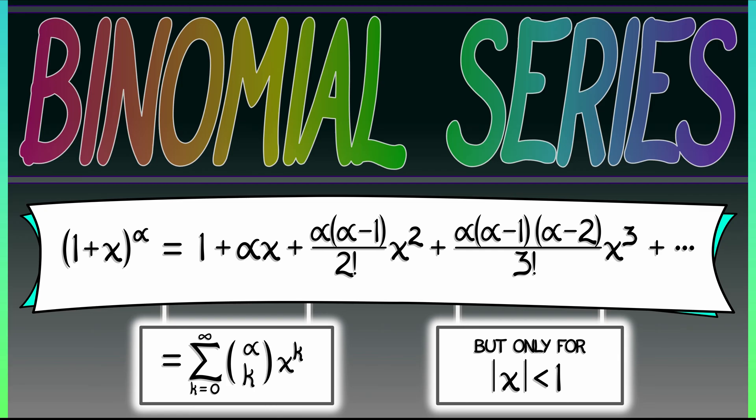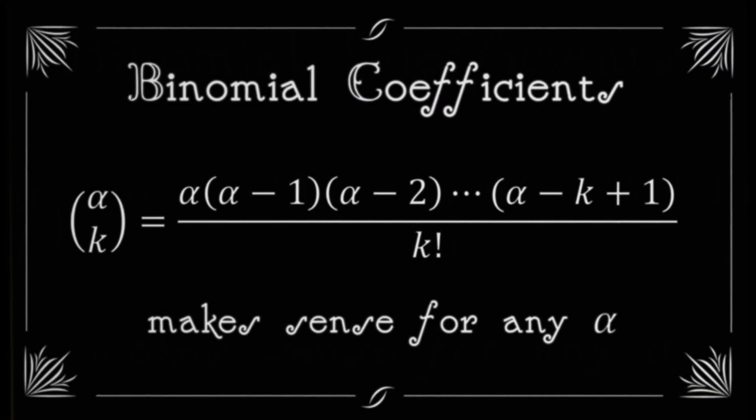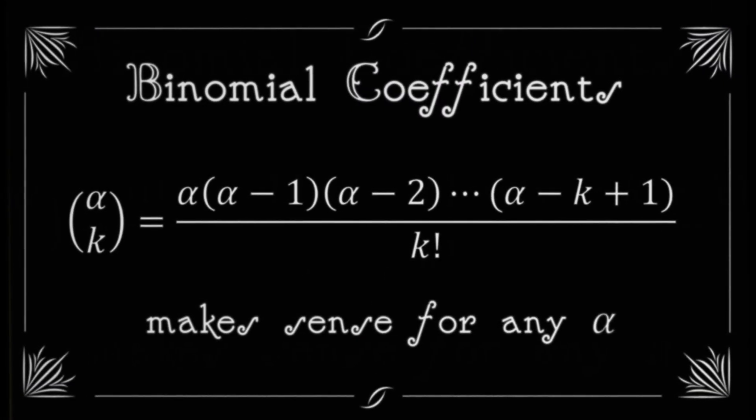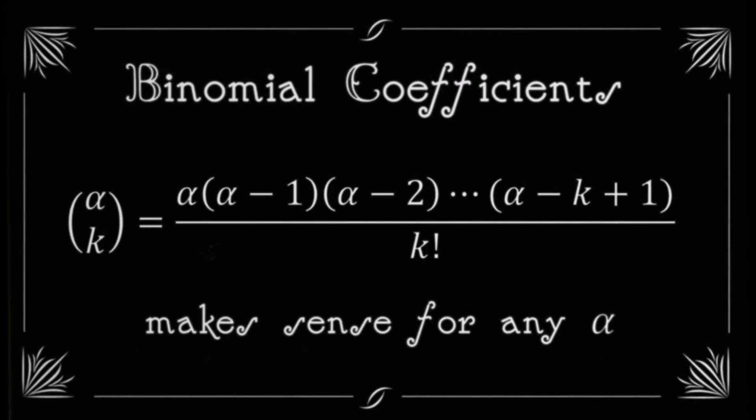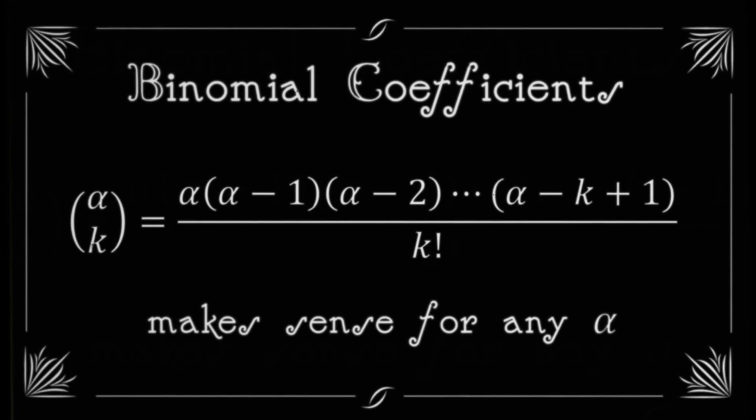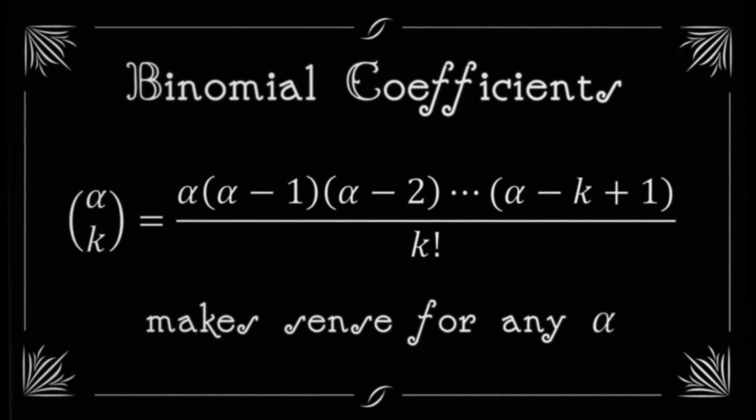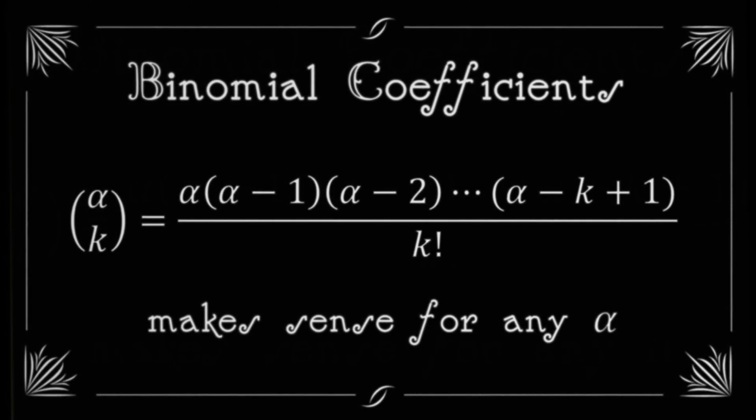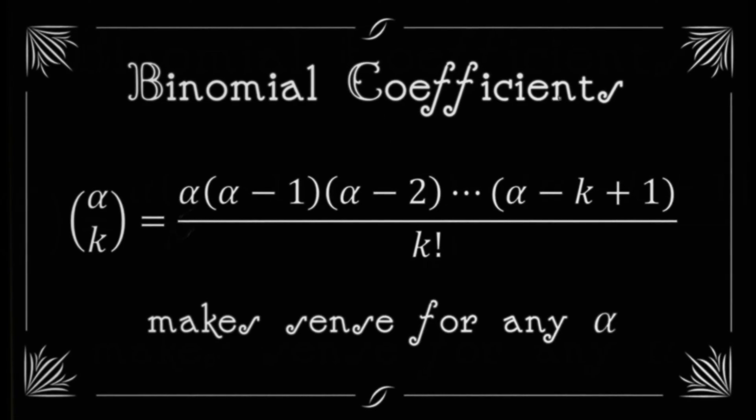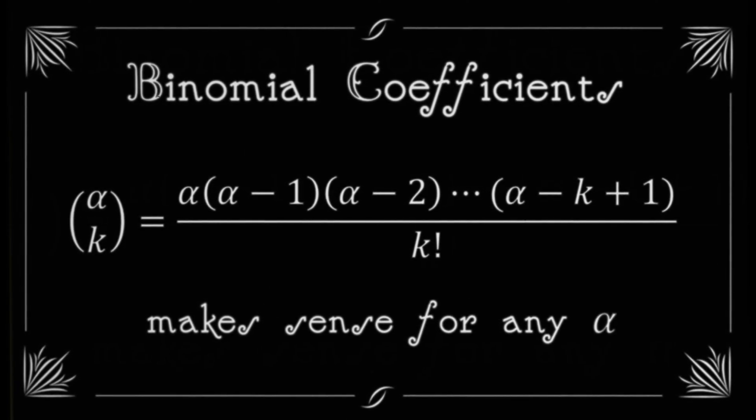You may recall this from previous times. These are the binomial coefficients, and they are defined in the same way that we've used them. Alpha choose k is alpha times alpha minus 1 times alpha minus 2. You keep going k steps so that you end with alpha minus k plus 1.